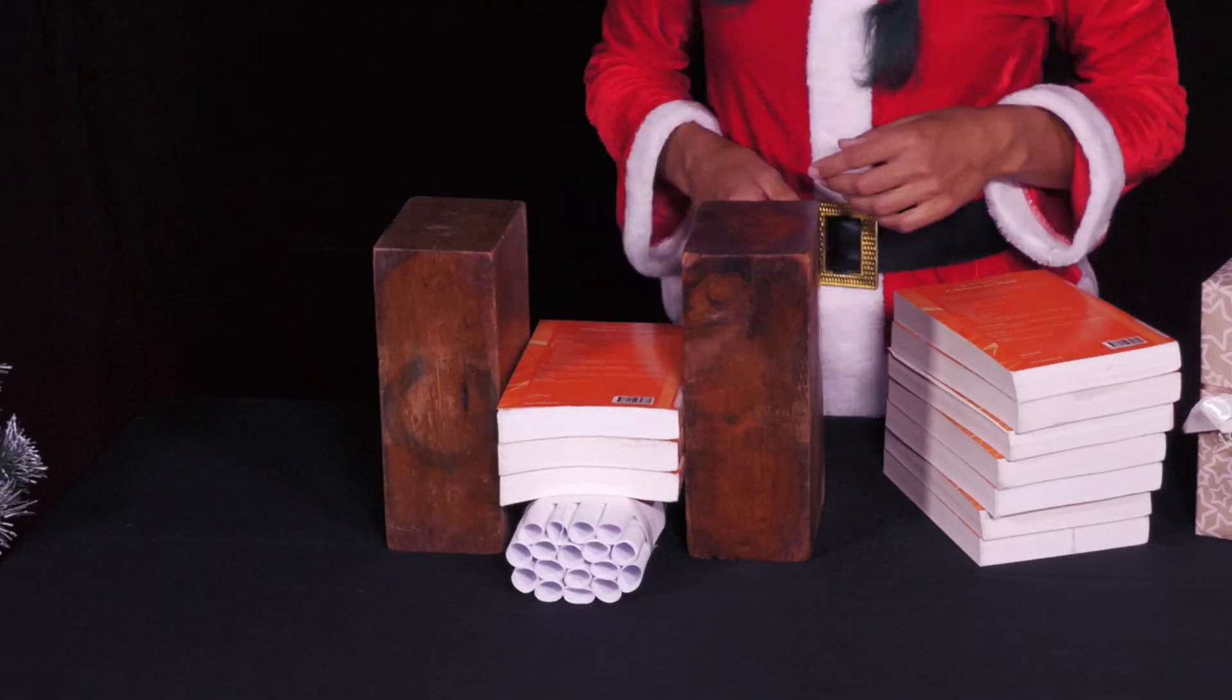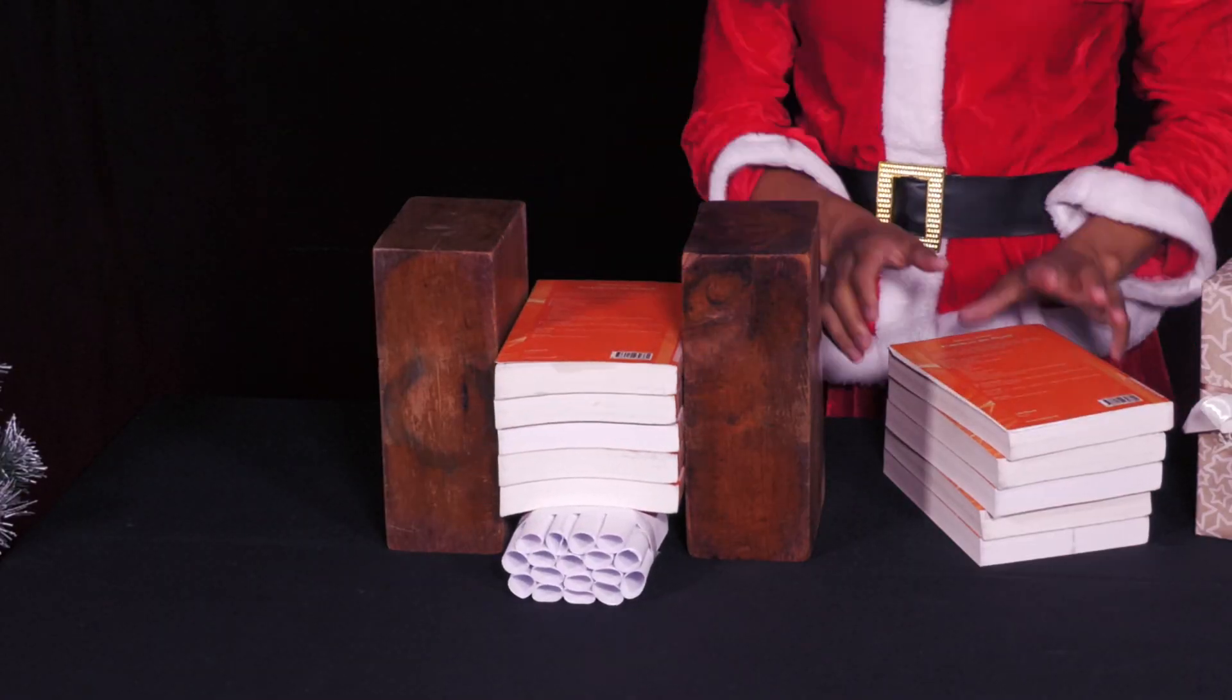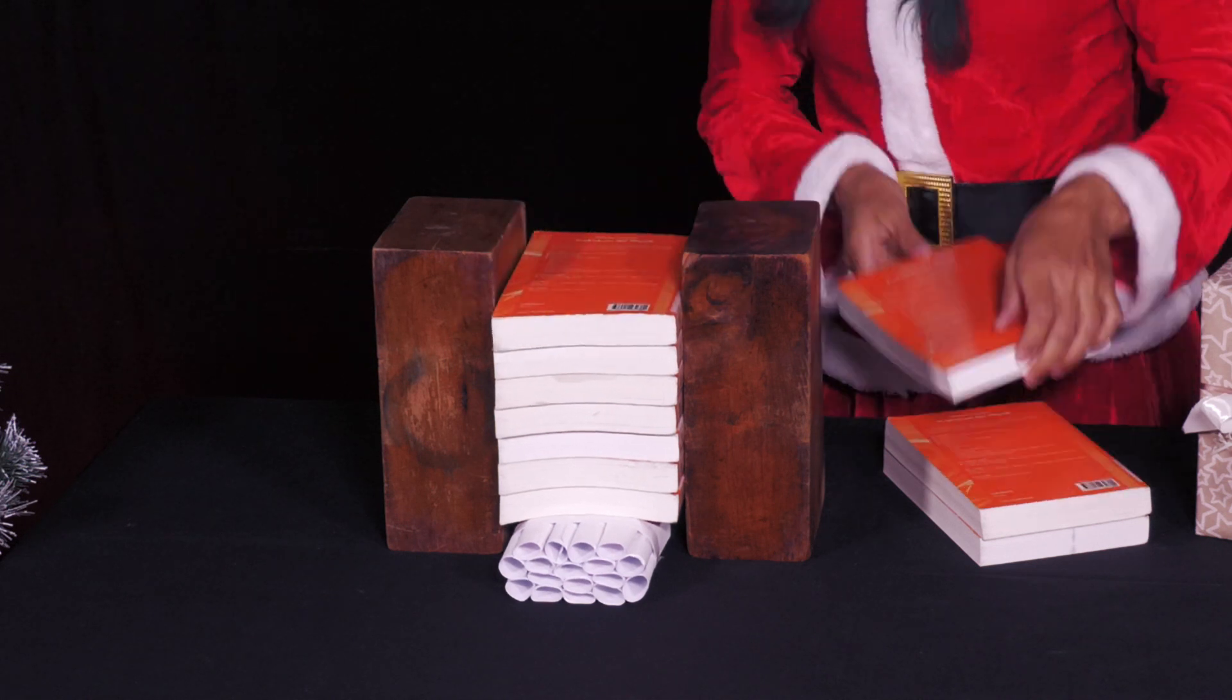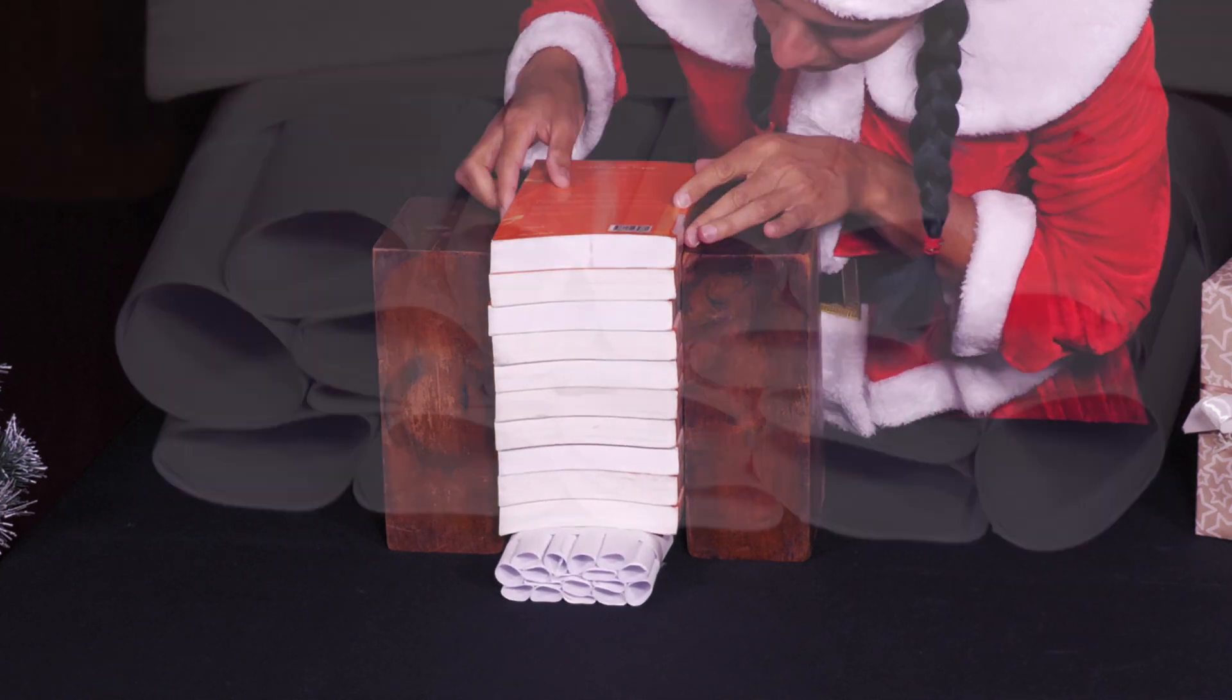The geometry of hollow round tubes is very often found in nature, for example in straws or plant stems. It offers great stability with minimal weight and yet a certain flexibility.